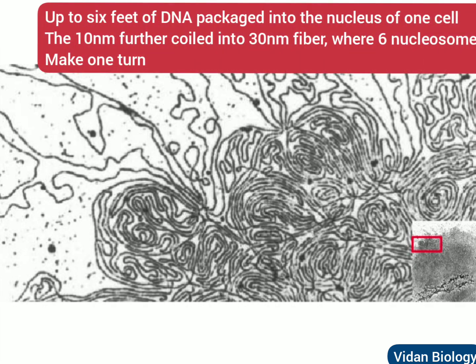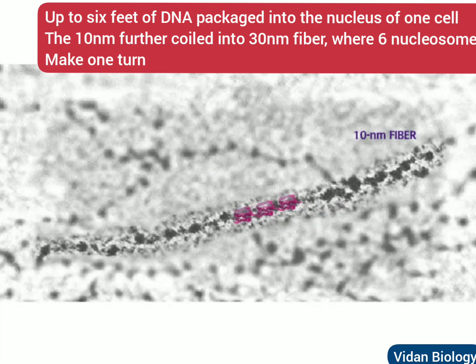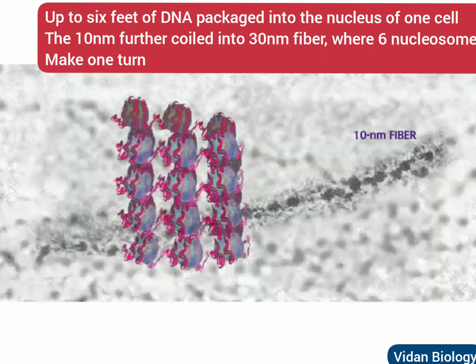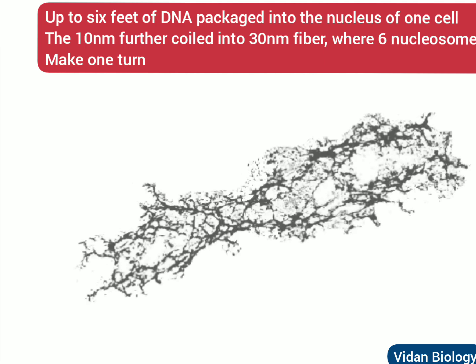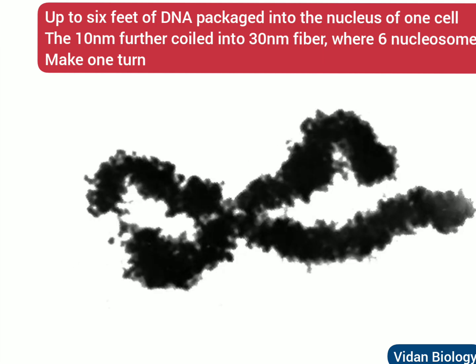Up to 6 feet of DNA is packaged to fit into the nucleus of one cell. The DNA is first wrapped around the histone core to form nucleosomes — the 10 nanometer fiber. The 10 nanometer fiber is further coiled into a 30 nanometer fiber, where 6 nucleosomes make one turn. The 30 nanometer fiber is then looped onto the protein scaffold when chromosomes condense.